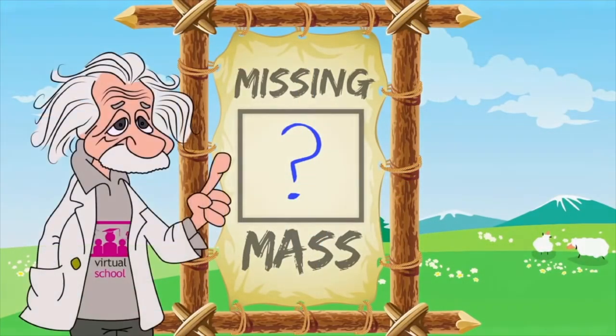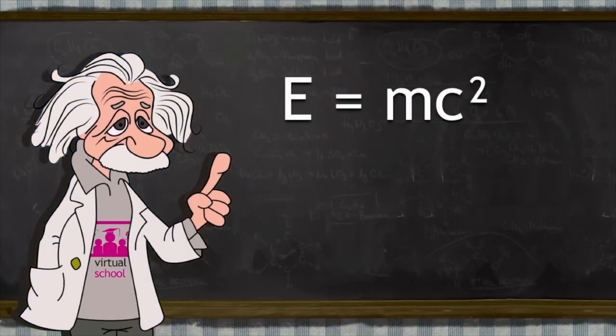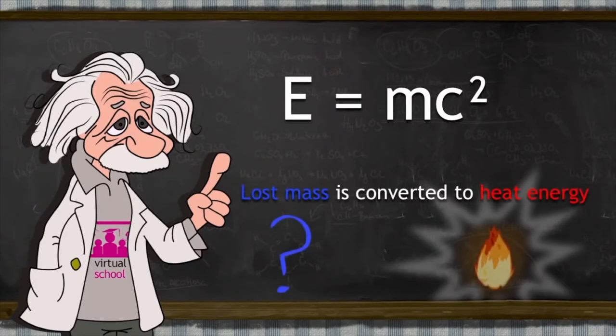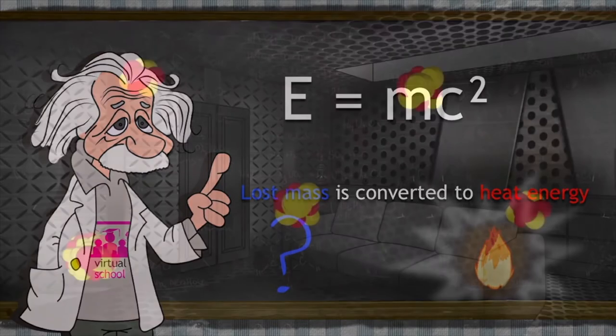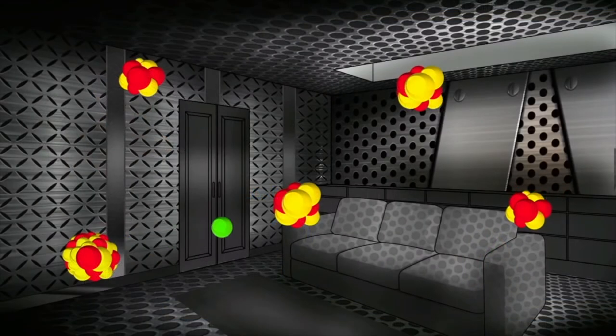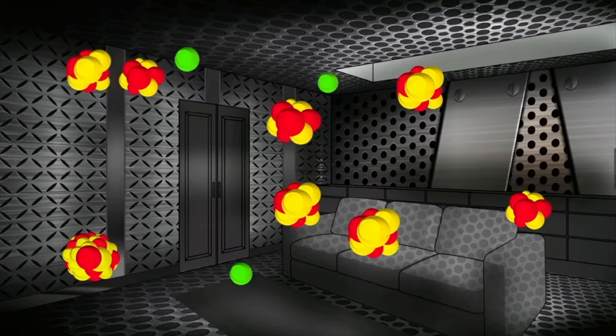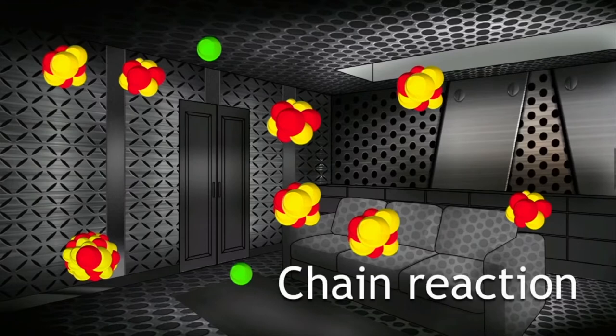Einstein's famous equation, E equals MC squared, shows that this incredibly small amount of lost mass is converted into a huge amount of heat energy. So we know each atom splitting up gives off some heat energy. But it gets really exciting when you put a bunch of these atoms together. As one atom splits up, it releases some energetic neutrons ready to split up some more atoms, which in turn releases more energetic neutrons, which will split up some more atoms, and on and on. This is known as a chain reaction.